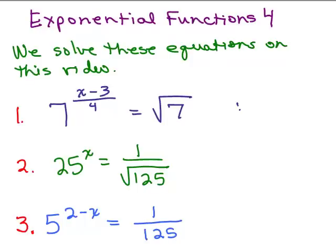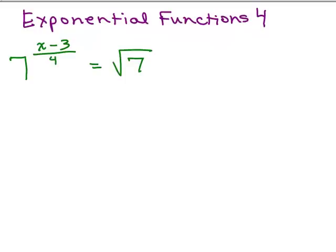We're going to continue solving some exponential equations. Remember, the goal is to write it in the form so the base is the same. So we have 7 to the x minus 3 over 4 equals square root of 7.